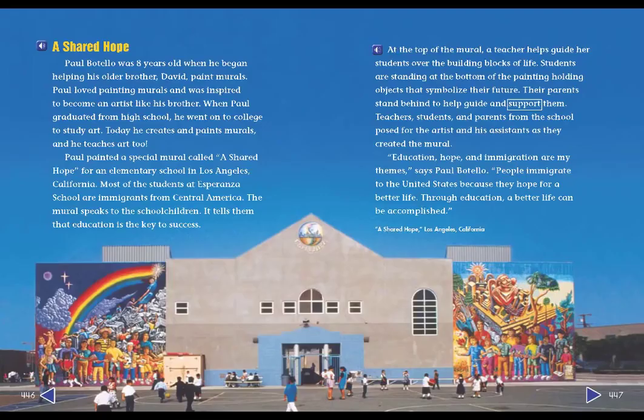A Shared Hope. Paul Botello was eight years old when he began helping his older brother David paint murals. Paul loved painting murals and was inspired to become an artist like his brother. When Paul graduated from high school, he went on to college to study art. Today, he creates and paints murals, and he teaches art, too. Paul painted a special mural called A Shared Hope for an elementary school in Los Angeles, California.